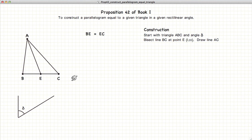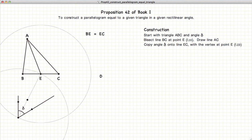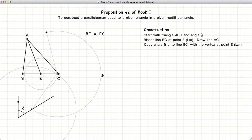What we're going to do next is copy the angle delta to the point E. So now we have copied the angle delta to the line EC.